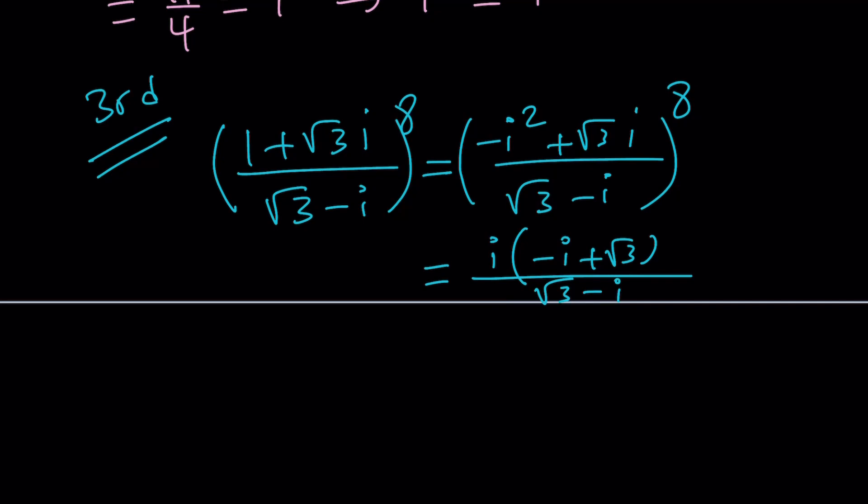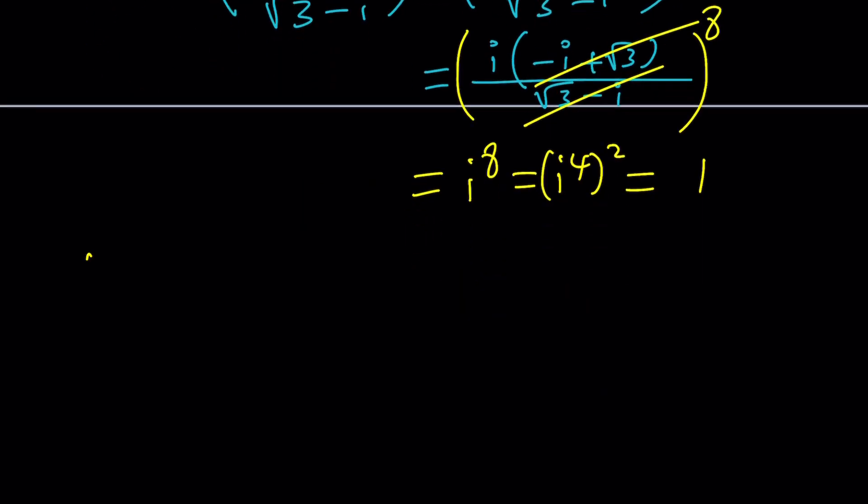And then we can go ahead and cancel these two out because they are the same. And this becomes i^8 again. And i^8 is i to the 4th squared, which is 1 because i^4 = 1. All right. Awesome.